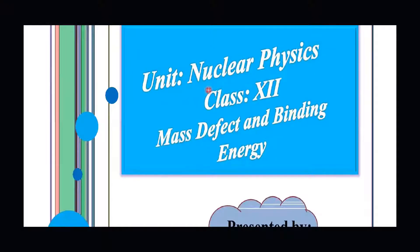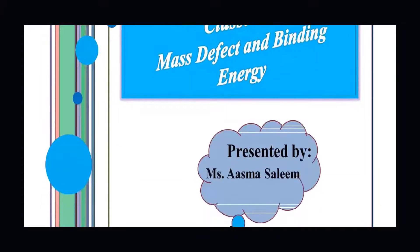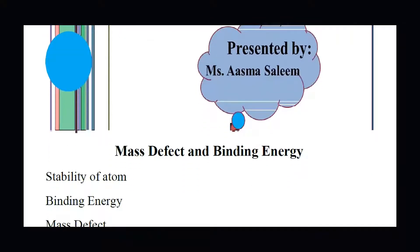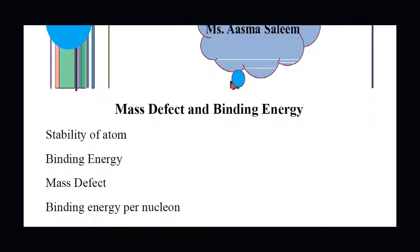Today we will start with nuclear physics, specifically the topic of mass defect and binding energy. We will discuss the basic relationship between mass defect and binding energy, the formulas involved, the stability of an atom or system, and finally binding energy per nucleon.